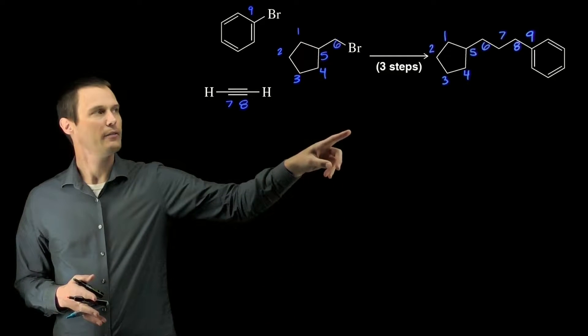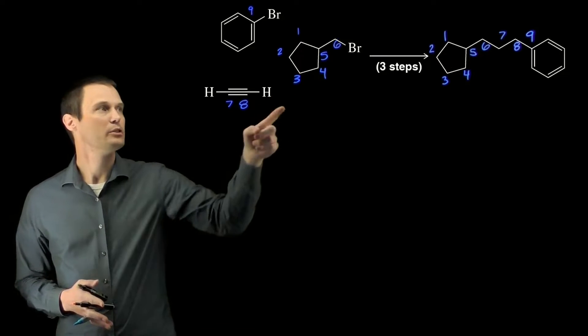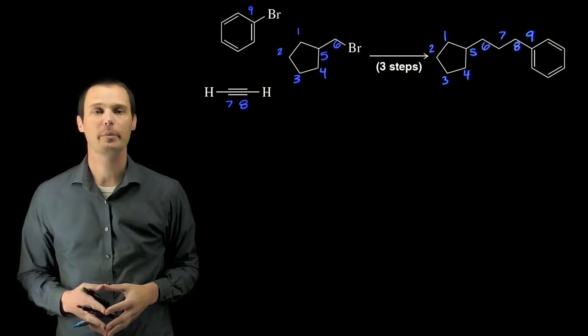I've started by numbering the five carbons in the cyclopentane ring. That must be these five carbons in the cyclopentane starting material, which must mean carbon number six is the next carbon off of the cyclopentane ring.